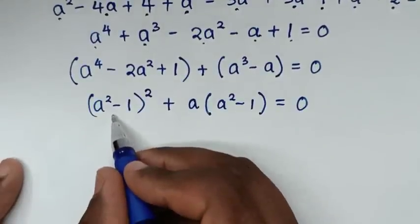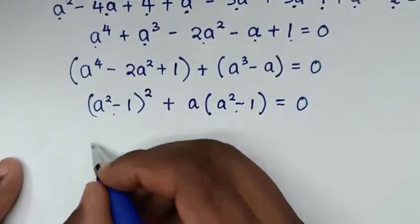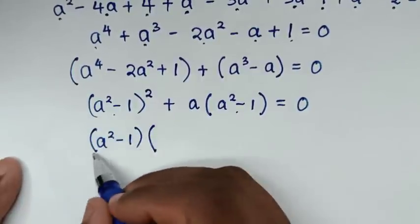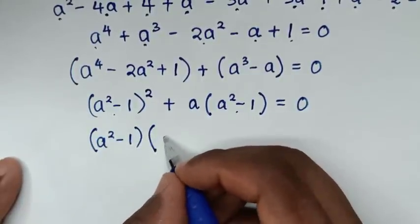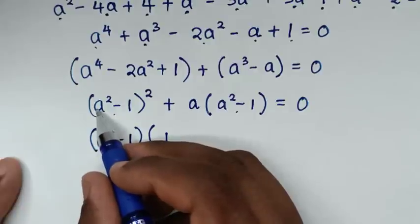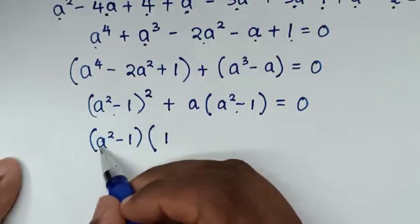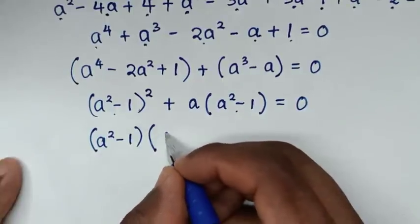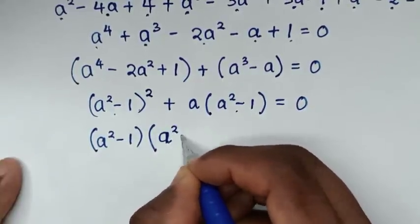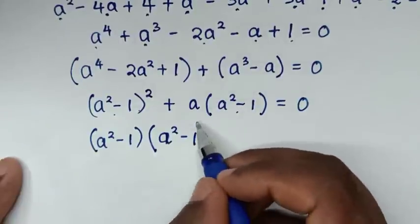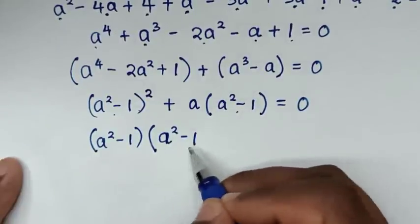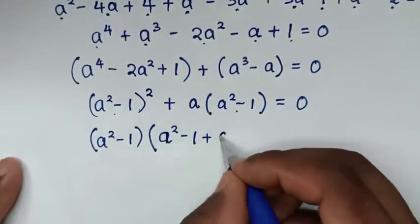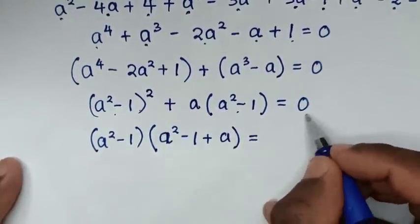Now, (a square minus 1) is common across both terms. We take (a square minus 1) out of the bracket. The first part, (a square minus 1) squared divided by (a square minus 1), gives (a square minus 1). Then the second part divided by this gives plus a. So we have (a square minus 1) times bracket (a square minus 1) plus a bracket equals 0.